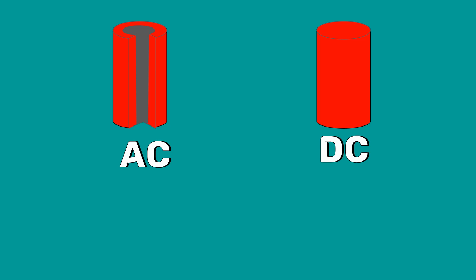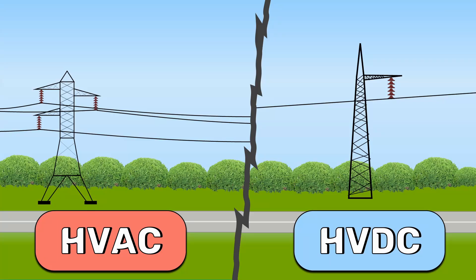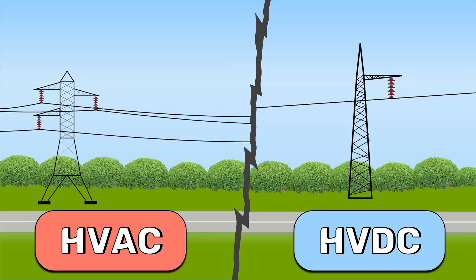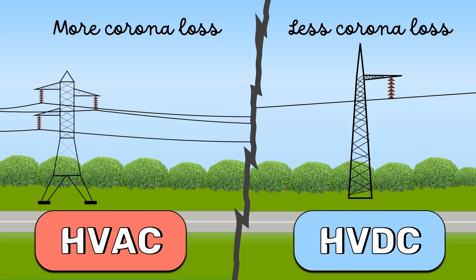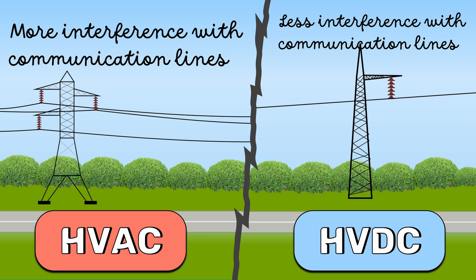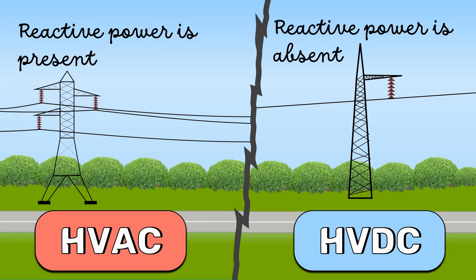Comparing the two systems: for the same amount of current to transmit, AC transmission requires a conductor with a larger diameter. This means HVDC transmission requires thinner conductors than HVAC transmission. Corona loss will be less in HVDC transmission than in HVAC transmission. Interference with nearby communication lines is less in the case of an HVDC overhead line than an HVAC line. The absence of reactive power in HVDC transmission also reduces the power loss in HVDC.